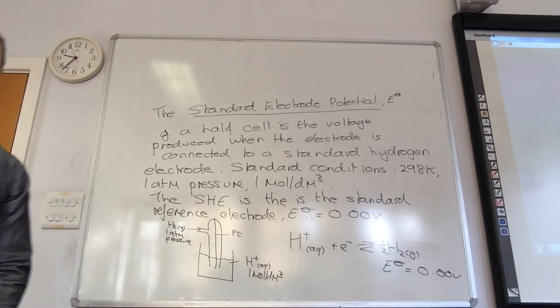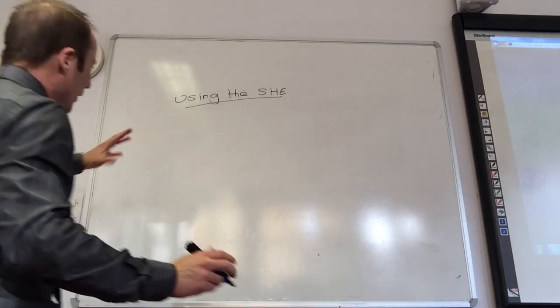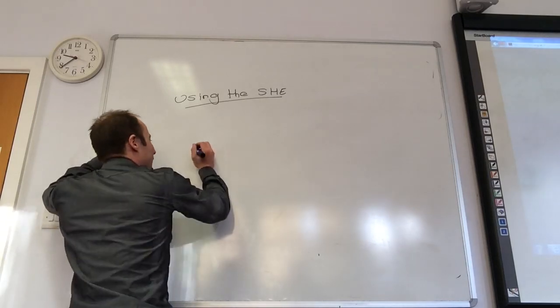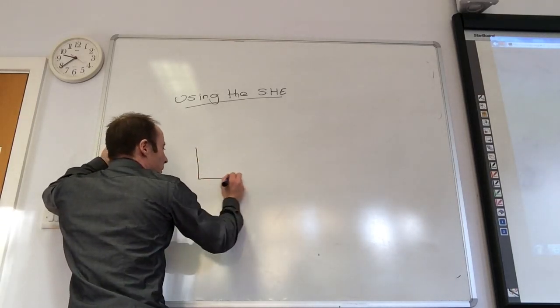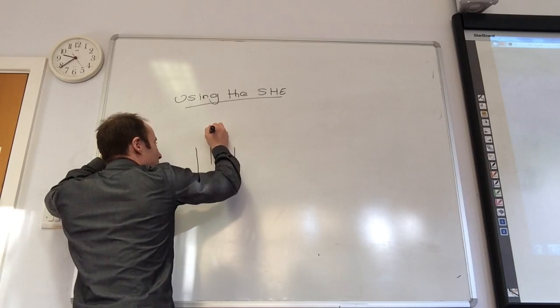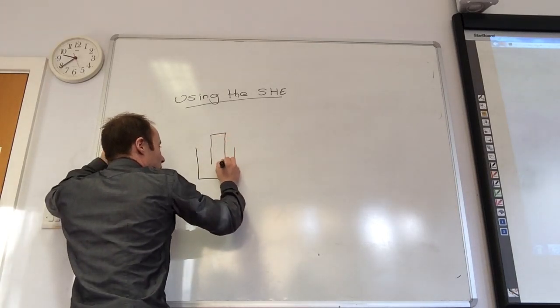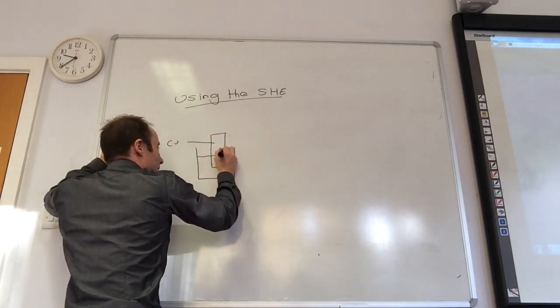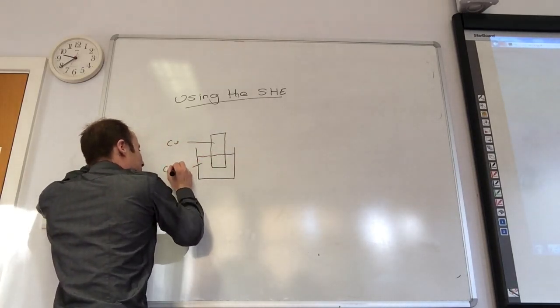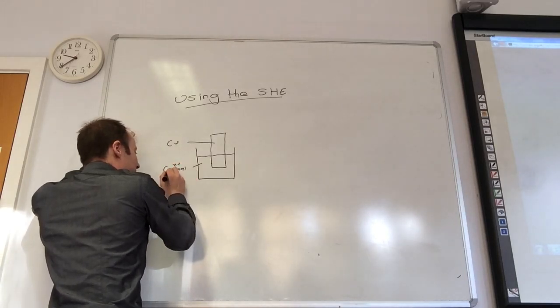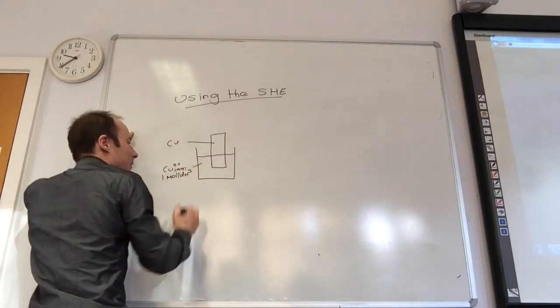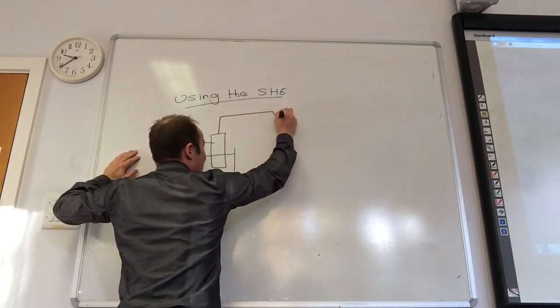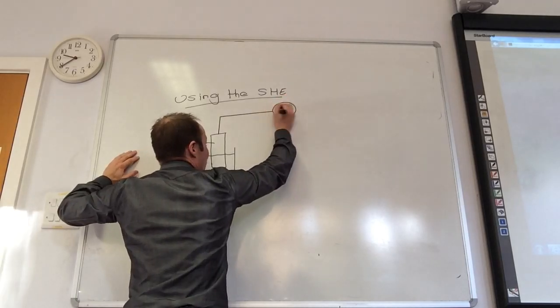So how do we actually use the standard hydrogen electrode in practice? Well, relatively easily. If I wanted to do my copper guy, I would have in my solution my copper metal. In solution I've got my copper 2+ ions, don't forget, one mole per decimeter cubed.